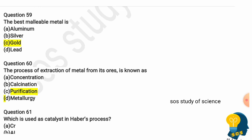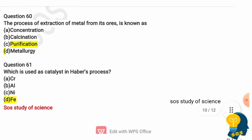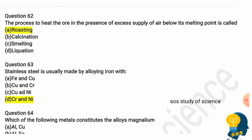Question 59: The best malleable metal is? Options are aluminium, silver, gold, and lead. The correct option is gold. Question 60: The process of extraction of metal from its ore is known as concentration, calcination, purification, or metallurgy. The correct answer is metallurgy. Question 61: The process of heating the ore in the presence of excess supply of air below its melting point is called roasting, calcination, smelting, or liquidation. The correct answer is roasting — sulfide ores are heated in the presence of oxygen.